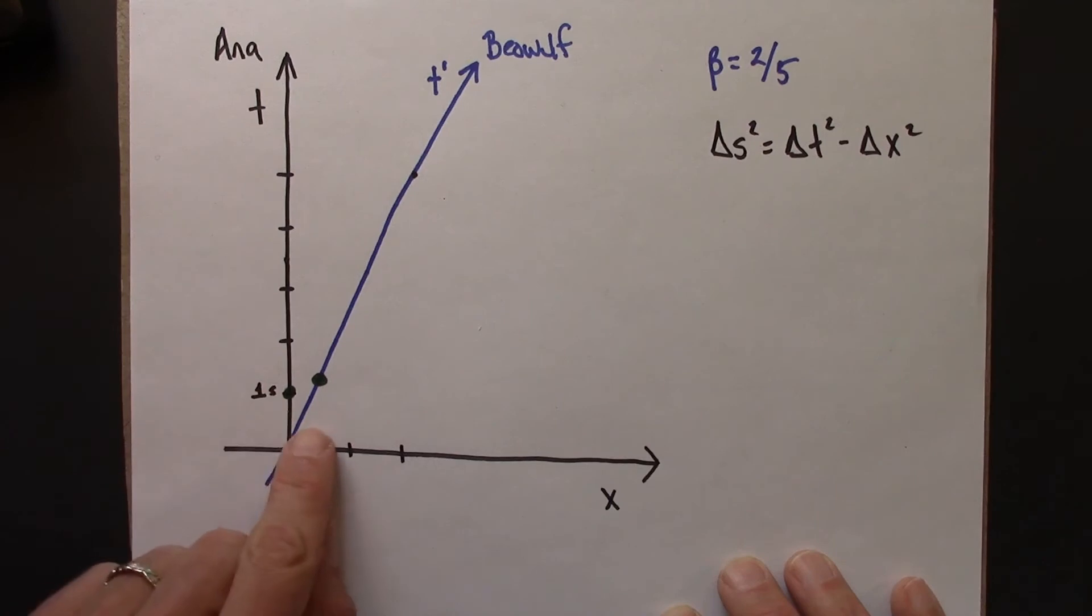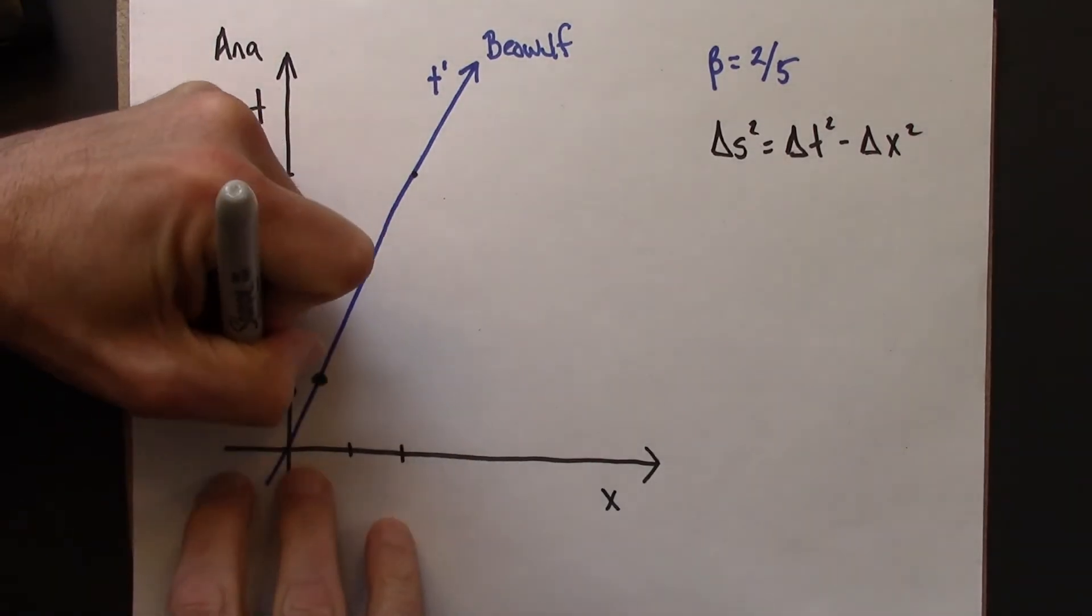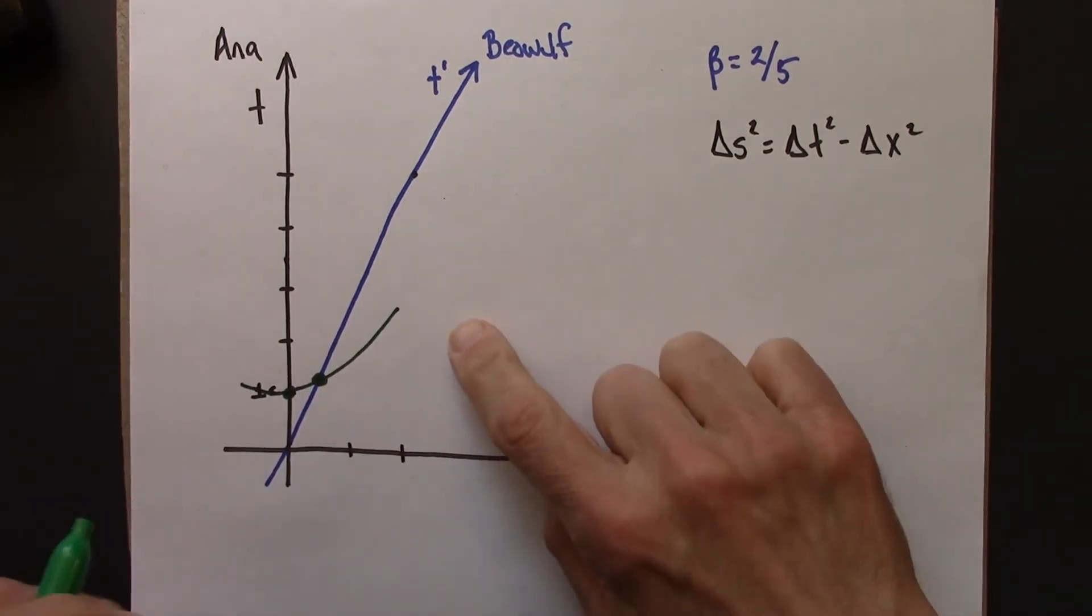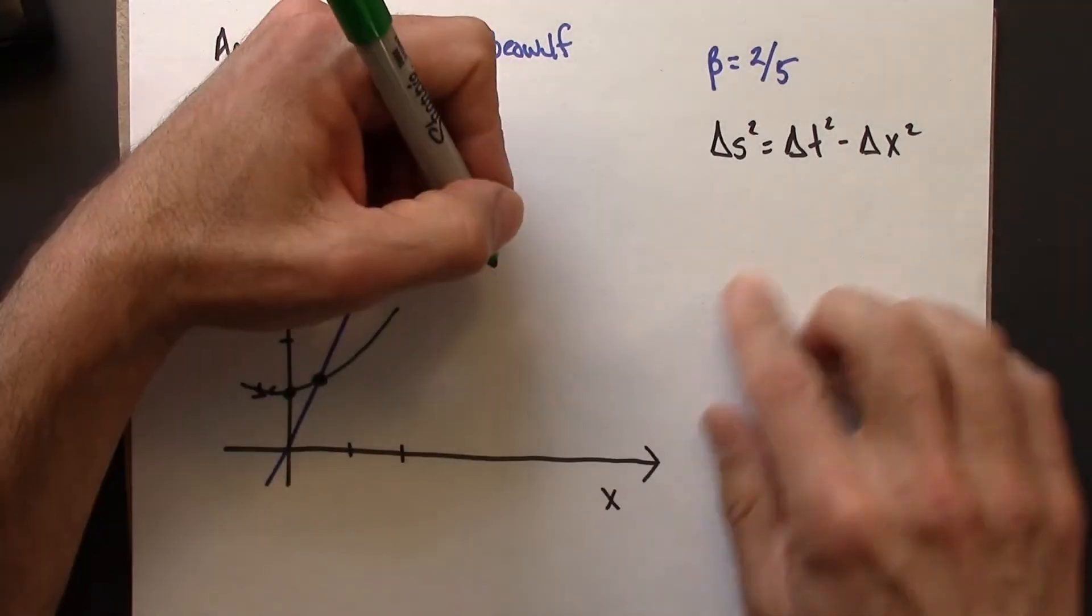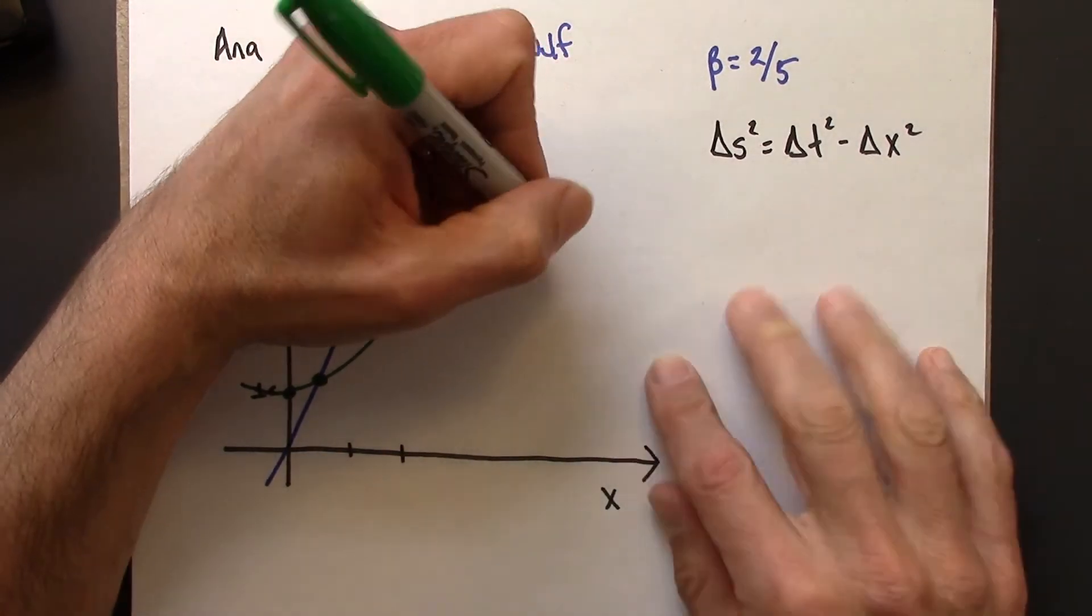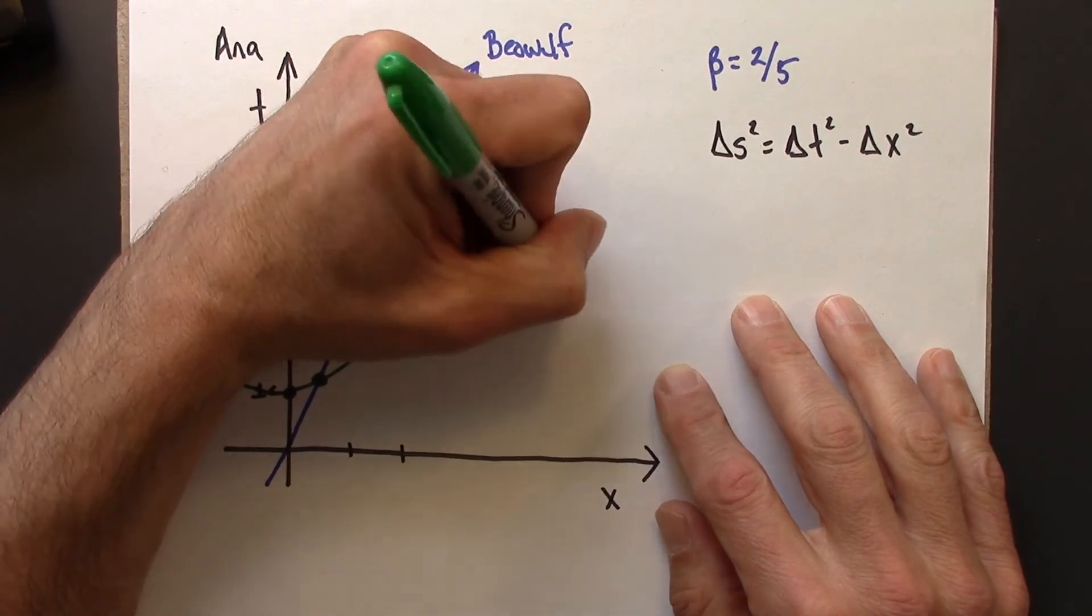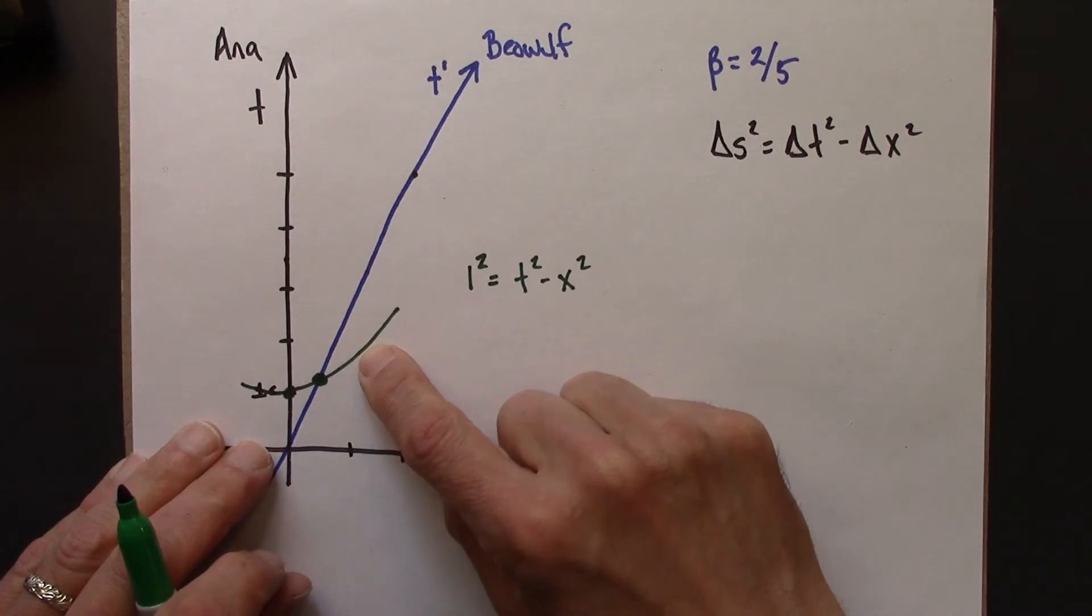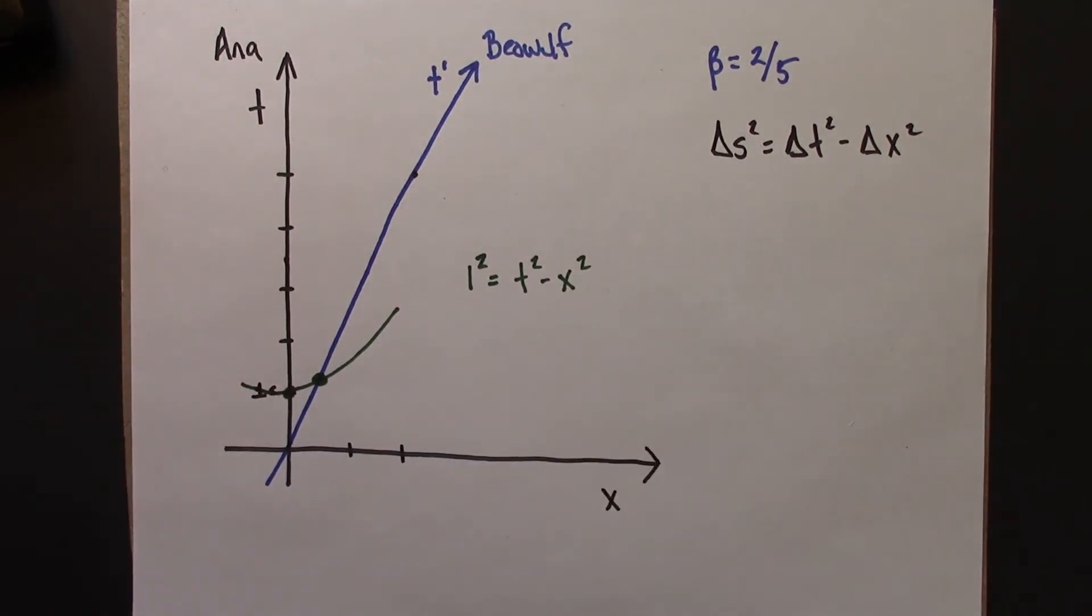So what that means is that the curve connecting these green dots is not a circle, as we saw before, but it's a hyperbola. So let me draw this on here. It's going to look something like this. So this hyperbola, delta s is 1. 1 squared t squared minus x squared. So that's the formula for this green curve.